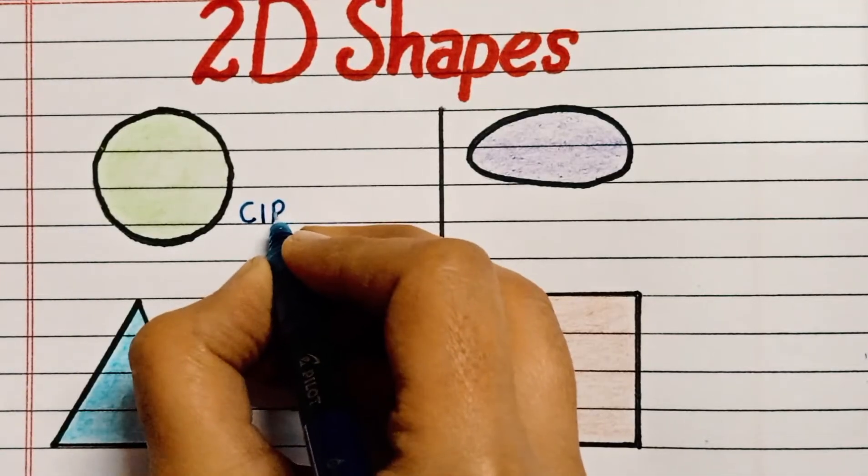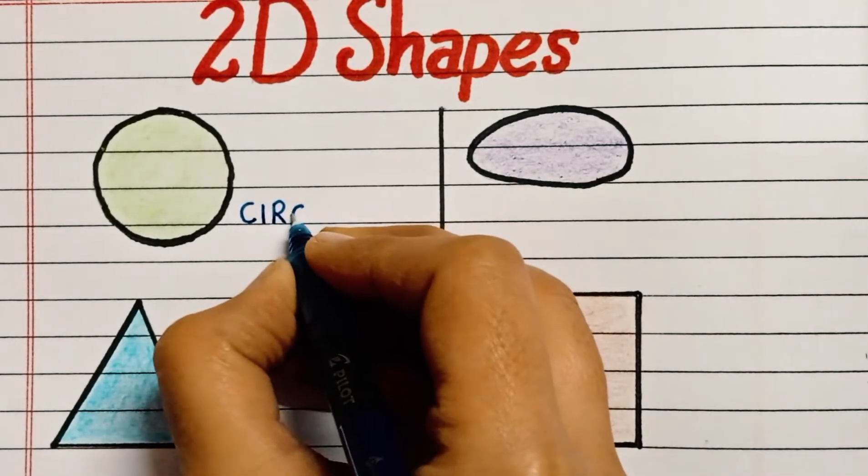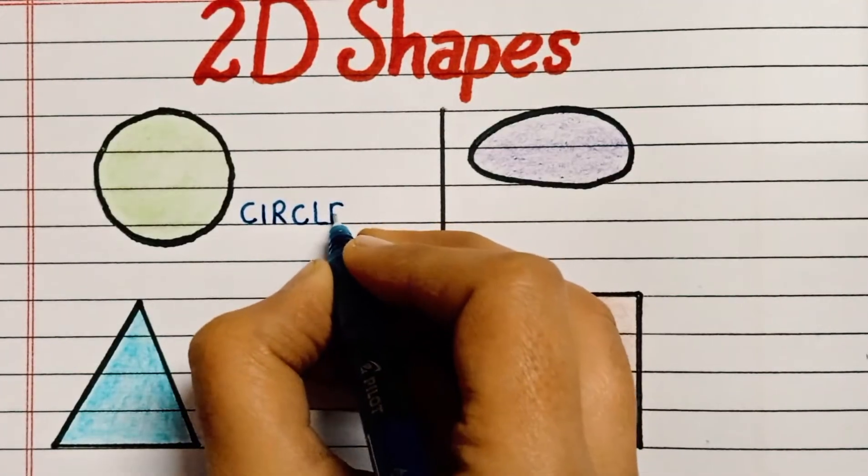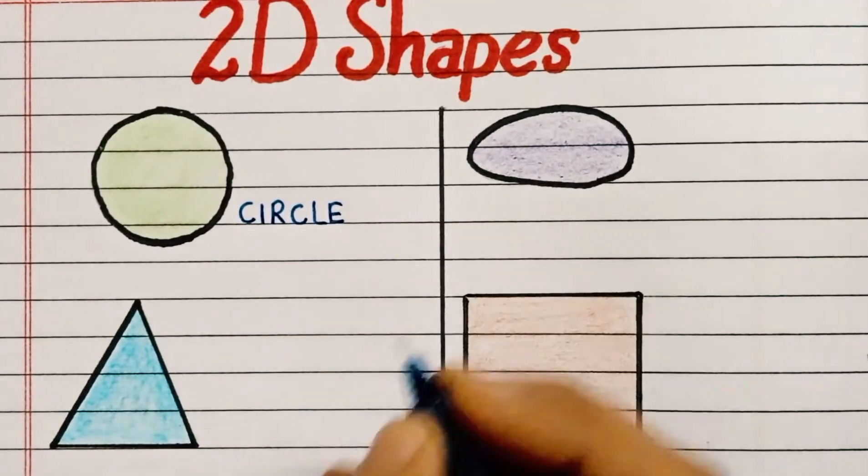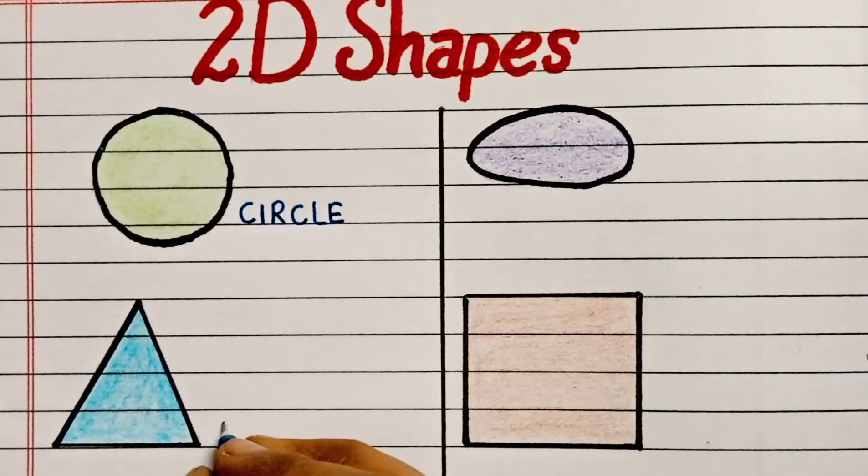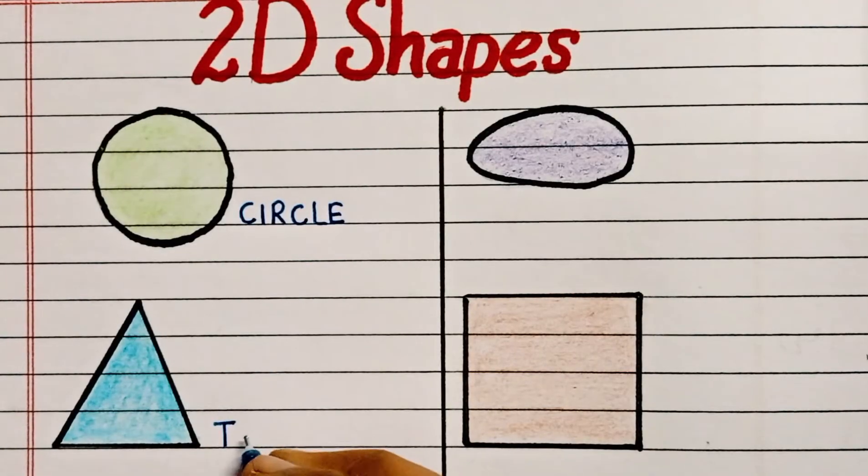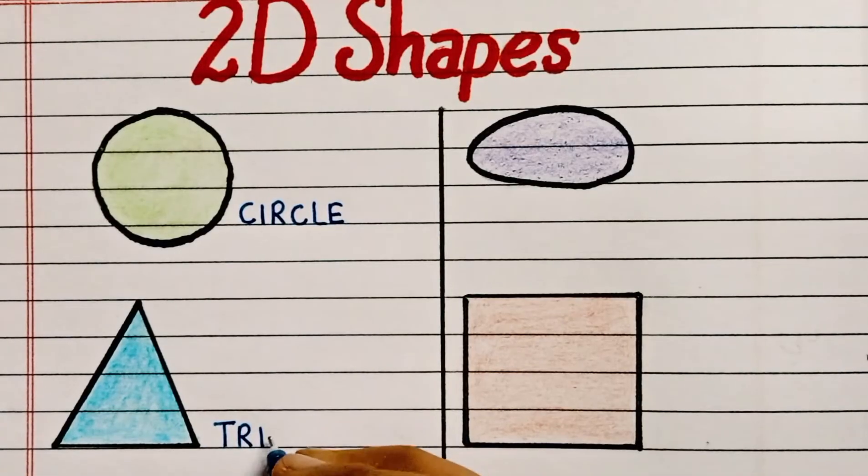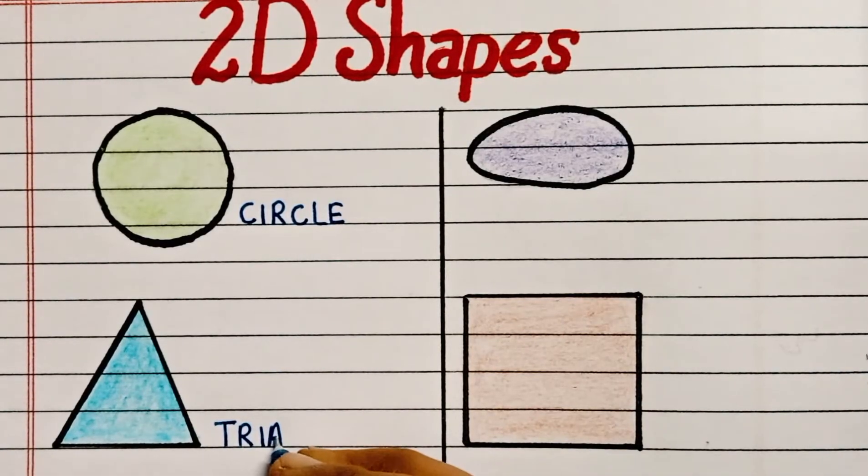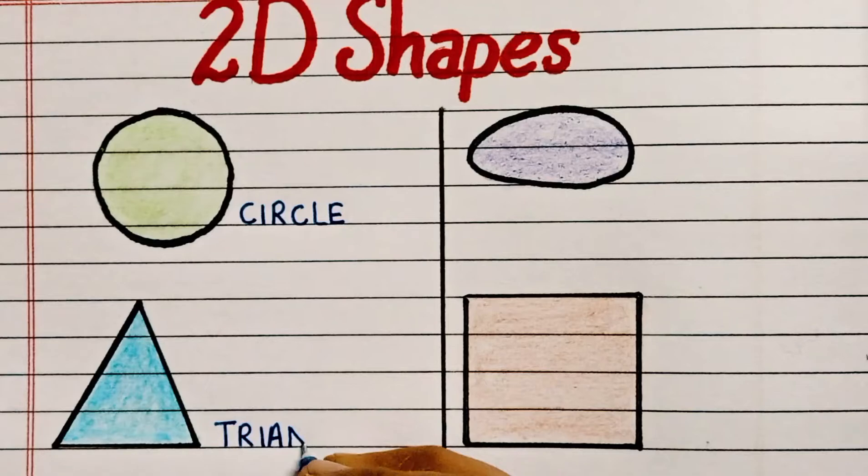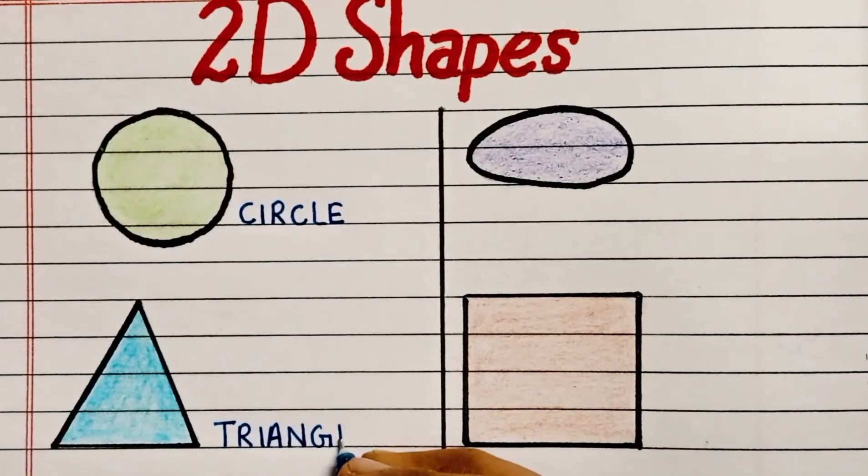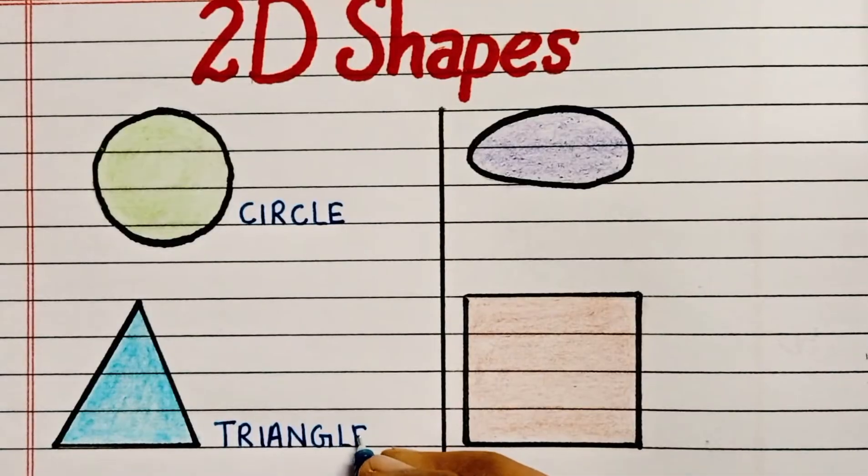C-I-R-C-L-E, Circle. T-R-I-A-N-G-L-E, Triangle.